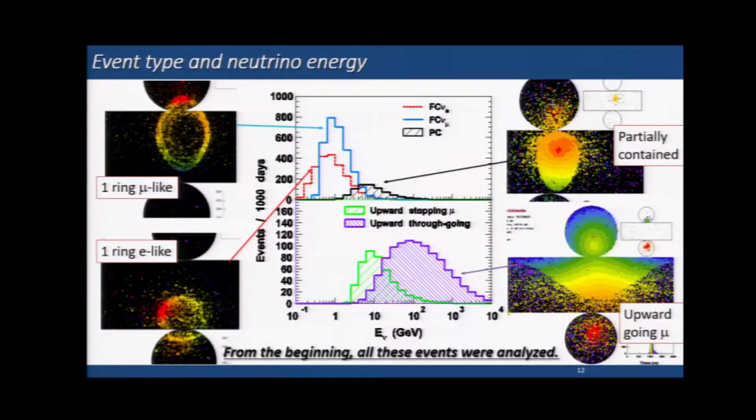After the start of the experiment, we had three analysis groups formed. One was on the analysis of solar neutrinos. Another was on the contained neutrino events — contained meaning partially contained and fully contained. The third was the upward-going muon analysis group. So from the beginning of the experiment, we studied fully contained events, partially contained events, and upward-going muons, and all these events were used, even in the early stage, for oscillation analysis.